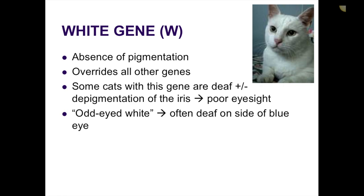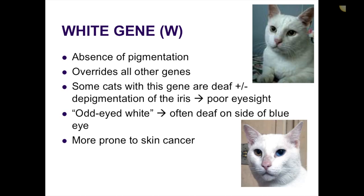The odd-eyed cat — the white eye — is often deaf on the side of the blue eye. So when they have bicolor eyes, a really light blue or white eye and then a brown eye, they are often deaf in the ear associated with the same side as that blue eye. These cats are also unfortunately more prone to skin cancer. These are all genetic linkages.